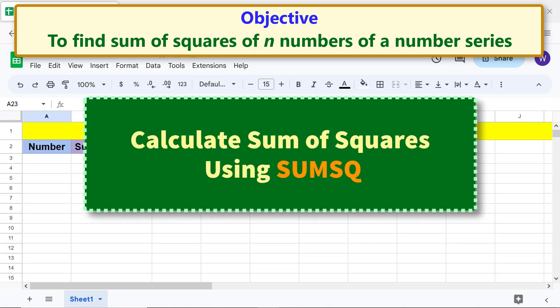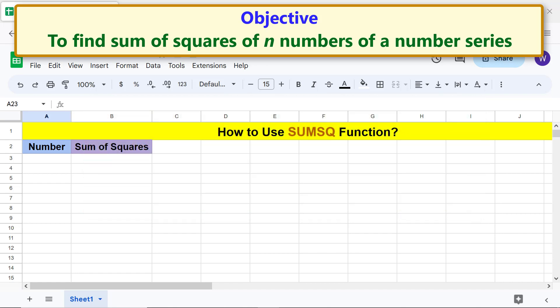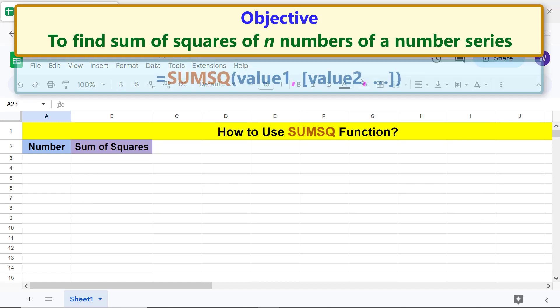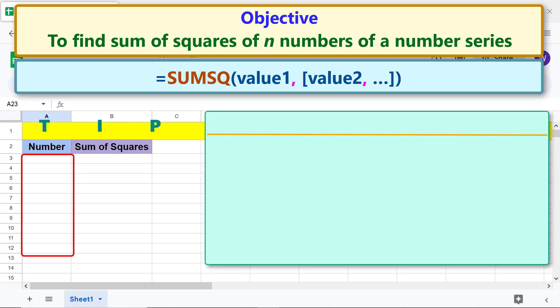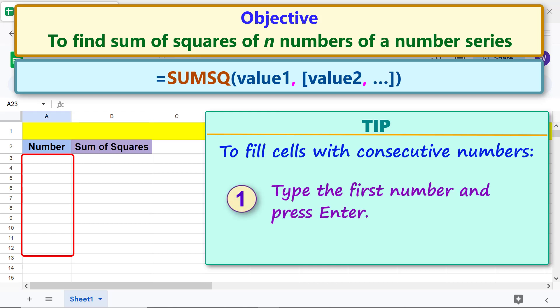Calculate sum of squares using SUMSQ. Here's the SUMSQ formula again. Okay, let's fill this range with numbers from 1 to 10. To fill cells with consecutive numbers, type the first number and press enter.